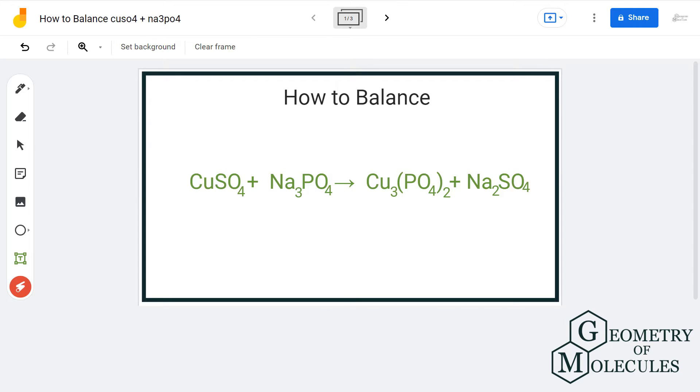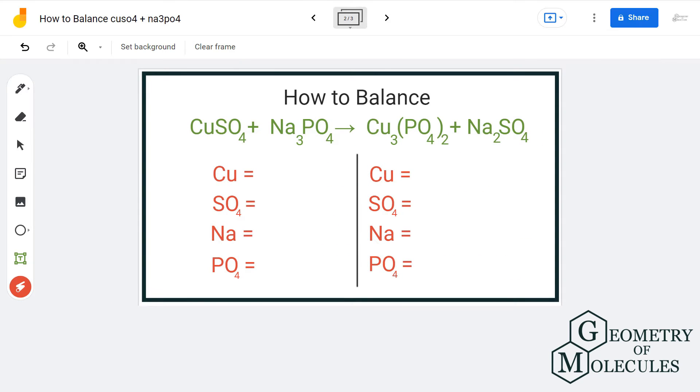Today in this video we will balance the following equation in which we have CuSO4, that is copper sulfate, and Na3PO4, that is trisodium phosphate, on the reactant side, and on the product side we have Cu3(PO4)2, that is copper 2 phosphate, and Na2SO4, that is sodium sulfate. To balance this equation, we are going to look at the total number of atoms on both reactant and product side.